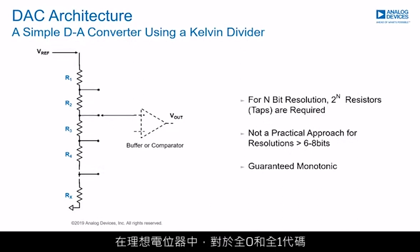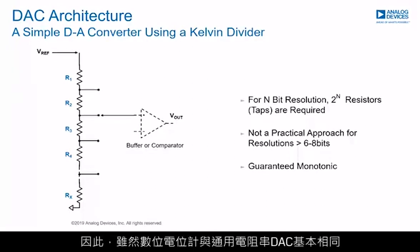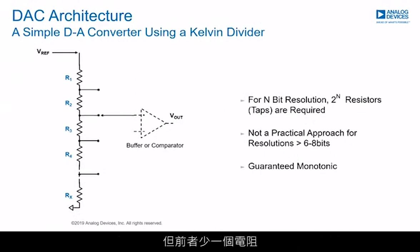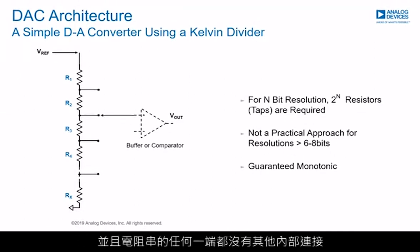In an ideal potentiometer, all-zeros and all-ones codes should connect the variable tab to one or other end of the string of resistors. So a digital potentiometer, while basically the same as a general-purpose string DAC, has one fewer resistor and neither end of the string has any other internal connection.